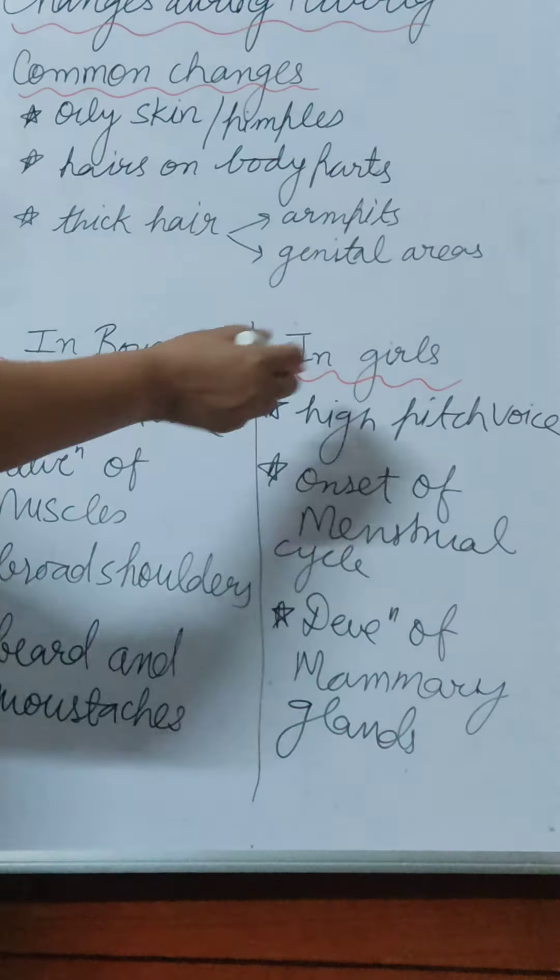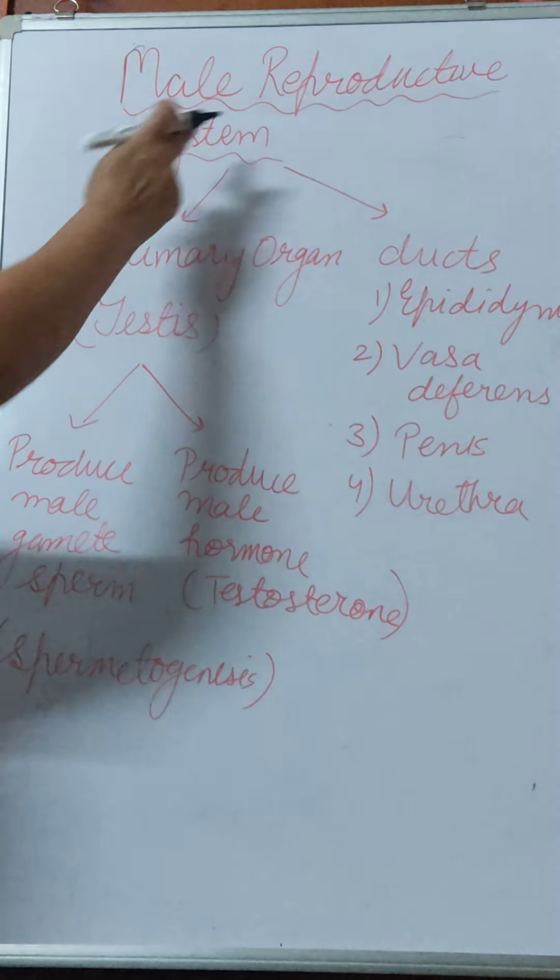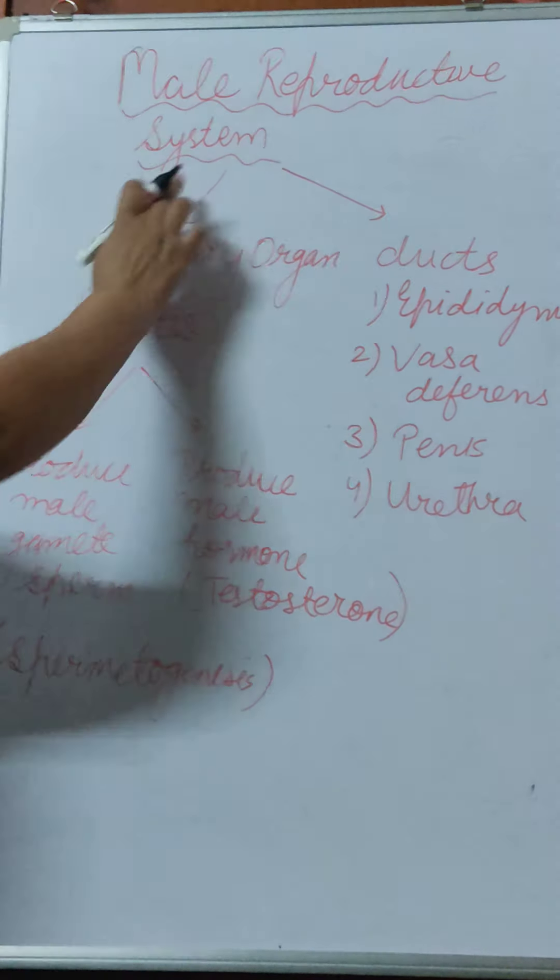Girls also experience curving of the hip region or pelvic girdle. All these changes are known as secondary sexual characters, which develop as the child reaches the age of puberty.